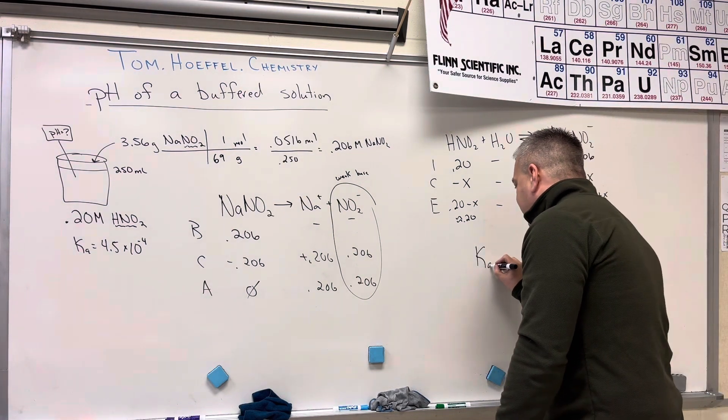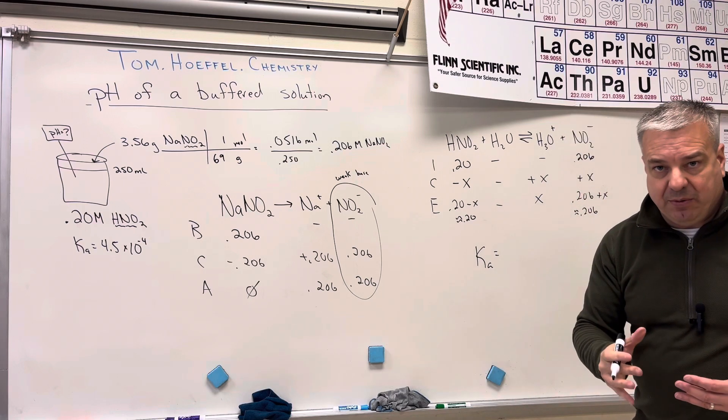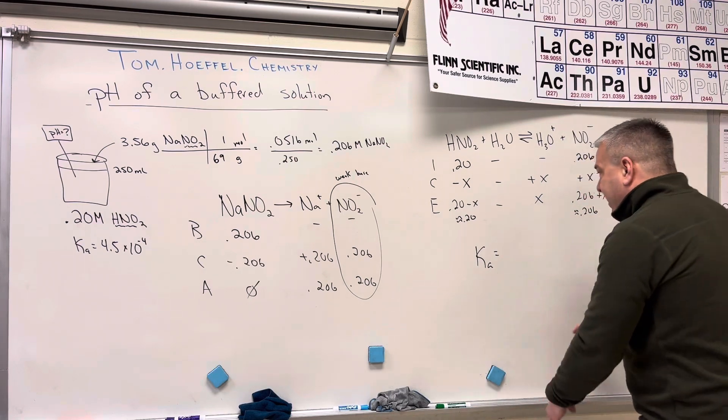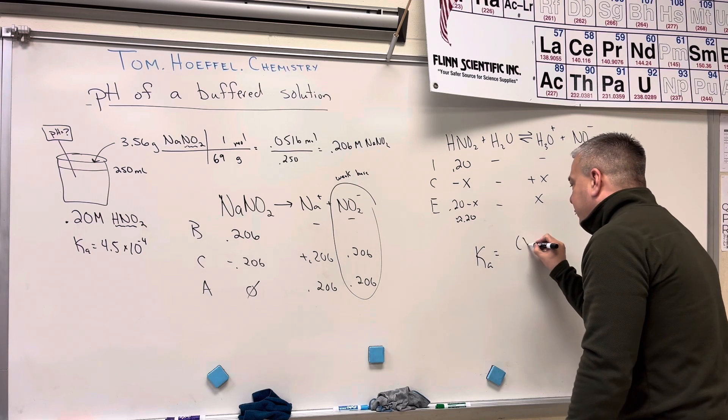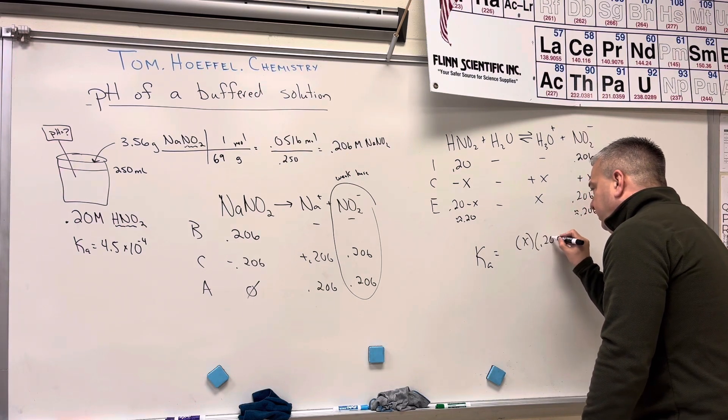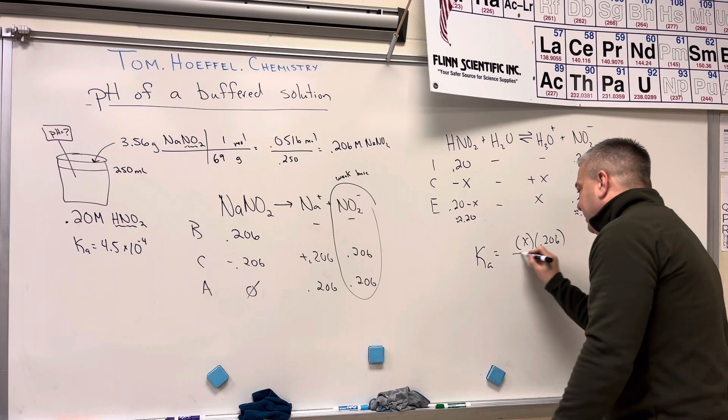And this is all going to be inputted into the equilibrium expression. So Ka is equal to the products, X times 0.206, divided by the reactants, which is 0.20,